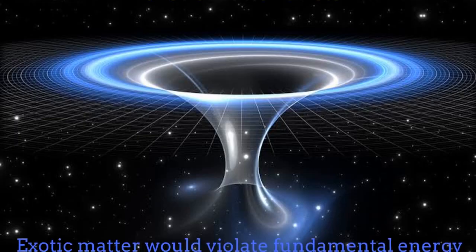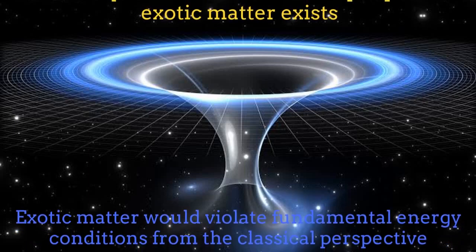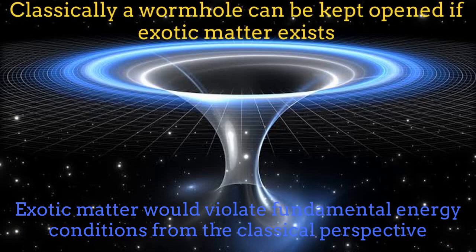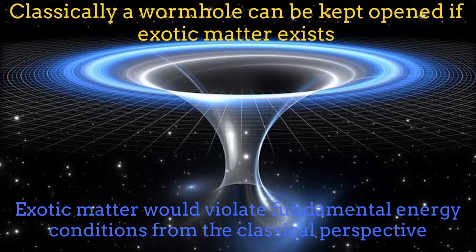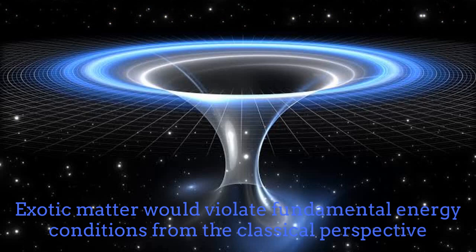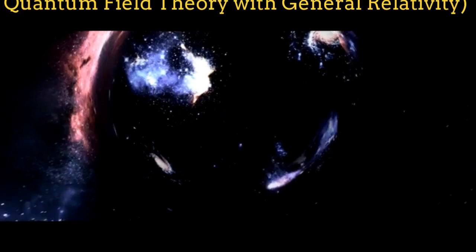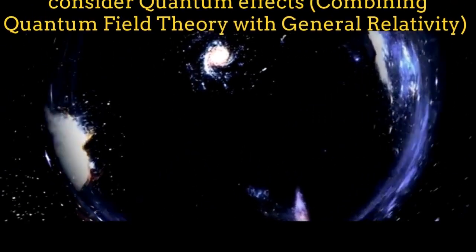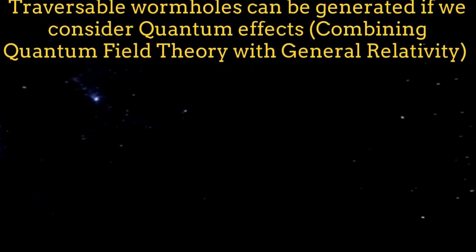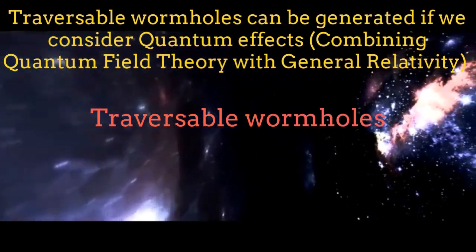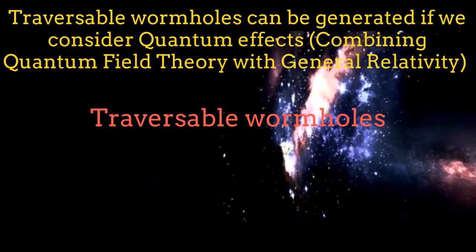But then, which modification do we need to make to the spacetime such that wormholes can be sustained in time? In order to cross a wormhole, like the movie Interstellar suggests, we need exotic matter violating the null and the weak energy conditions. This would imply, for example, negative energy densities in certain regions, something which classically doesn't happen. However, even if classically it seems to be impossible to sustain a wormhole, at the quantum level it is still possible to have regions with negative energy densities which, if stabilized, could help to generate traversable wormholes.